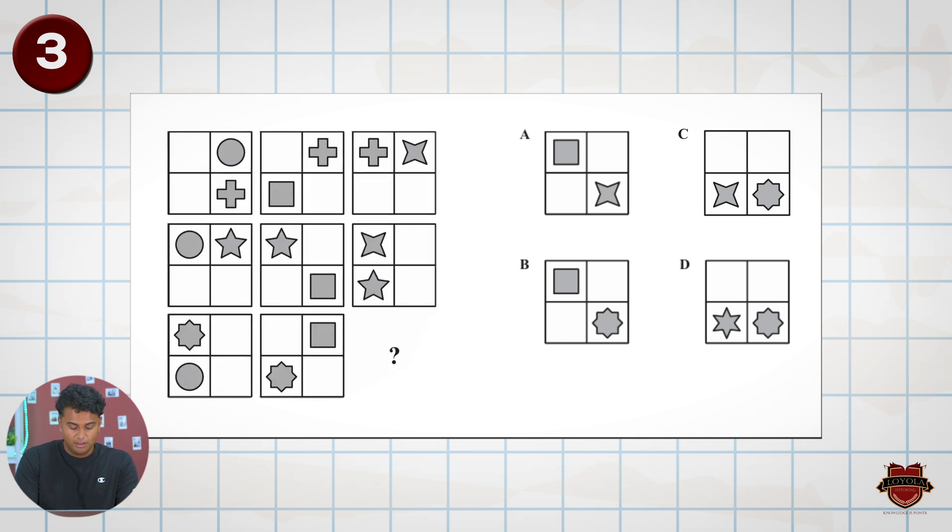The pattern that I'm seeing is that a feature will only go down the column or across the row, meaning that in any given image, there will only be two features. One feature that has been going down and one feature that's going across.